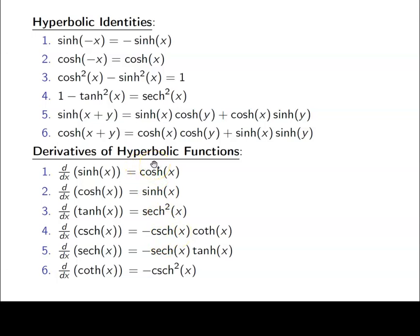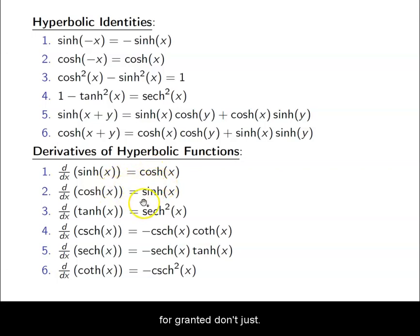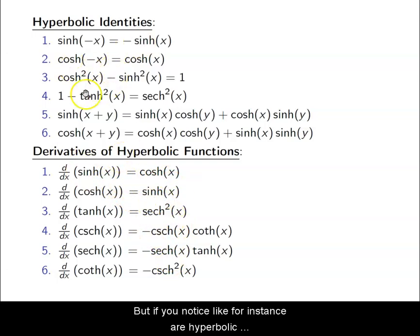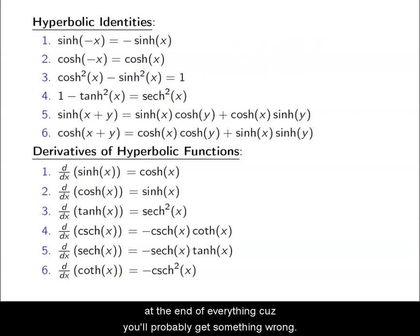These derivatives are similar in form because hyperbolic functions behave like trig functions, but don't take that for granted. Don't just assume that you can do trig and then add an h at the end — it doesn't work that way. The derivatives work out similarly, but the hyperbolic identities do have differences, so make sure you're using the hyperbolic formulas and not just defaulting to trig.